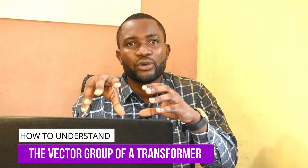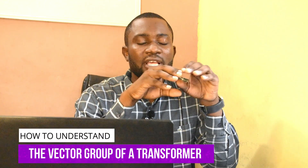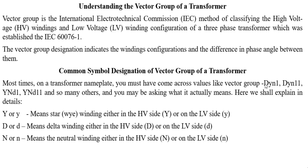In your transformer, we normally have name plates, and the name plate is represented with symbols. If you don't understand what those symbols actually mean, you might not be able to know what the vector group configuration is. In IEC 676-1, which is the standard that covers vector group configuration of the transformer, on the name plate you will see something like DYN1, DYN11, YND1, or YND11.